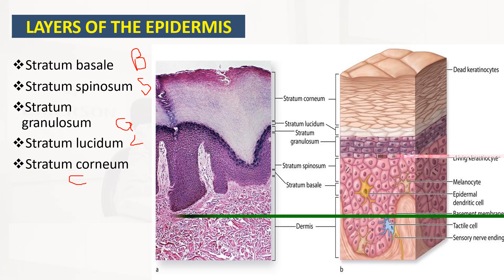The mnemonic phrase from superficial to deep is: C is for Calm, L is for Let's, G is for Get, S is for Sun, B is for Bent — so 'Calm, Let's Get Sun Burnt.' These are the layers of the epidermis from superficial to deep.